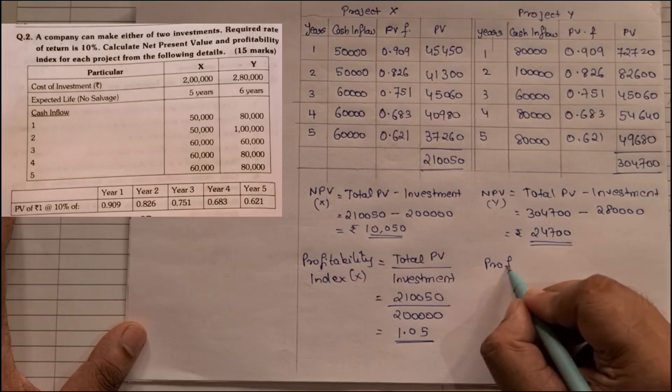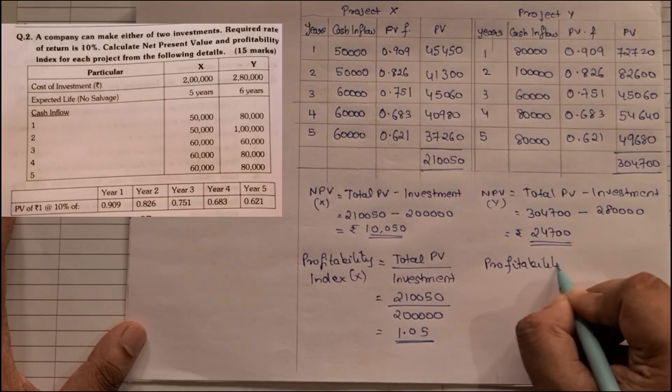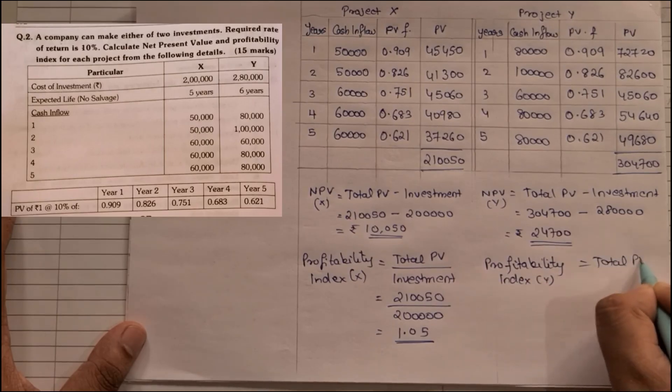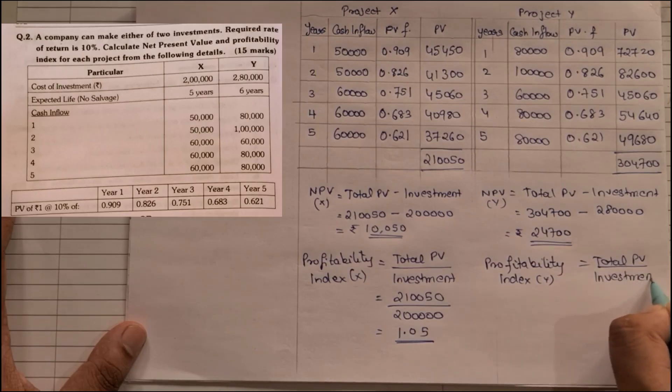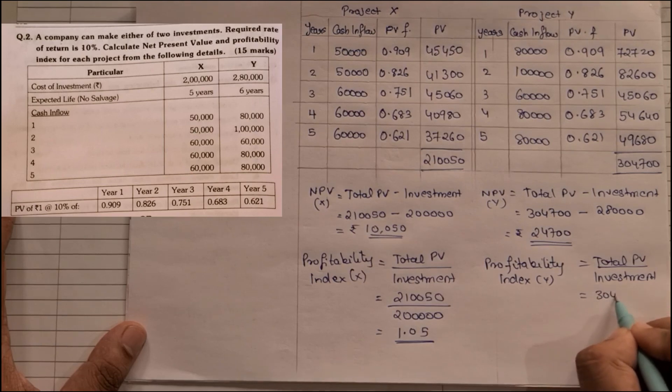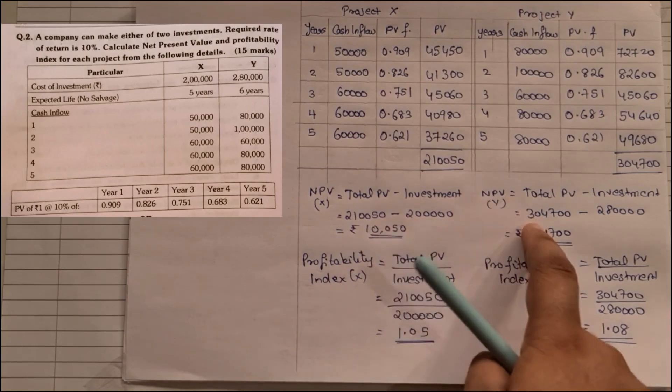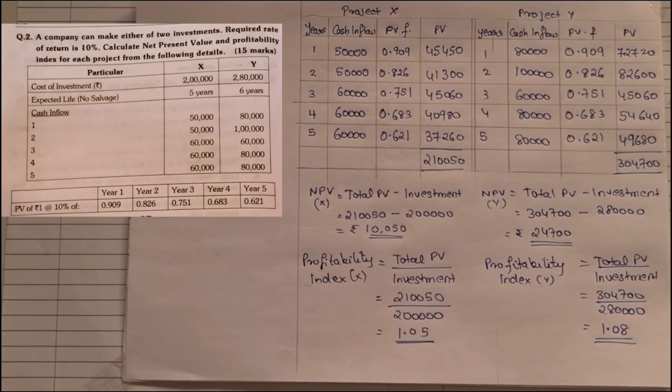Same way we go for the other side also. Profitability index, this is for Y. The formula is the same: total PV upon investment. Total PV was 3,04,700, investment is 2 lakh 80,000. So 3,04,700 divided by 2 lakh 80,000, it comes to 1.08. So now they have asked us to find NPV, we found the NPV, and we have found the profitability index. So this is how that sum was supposed to be solved.